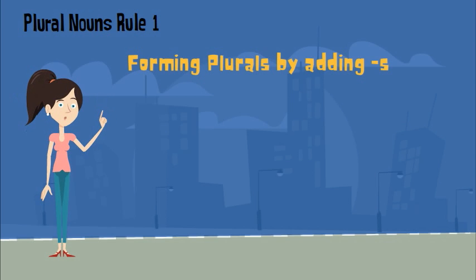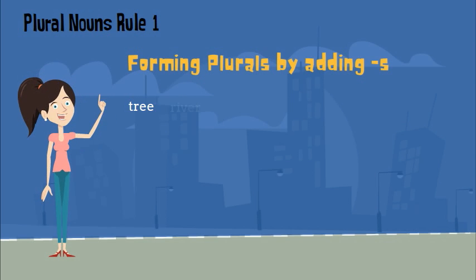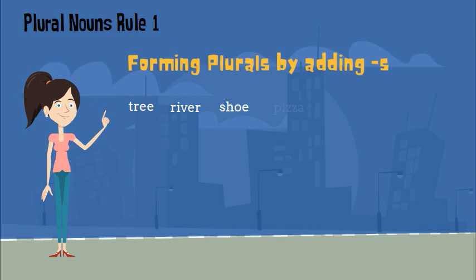Here are some singular nouns: tree, river, shoe, pizza, duck, and convoy. To make them plural, I would just add an S at the end — trees, rivers, shoes, pizzas, ducks, convoys.